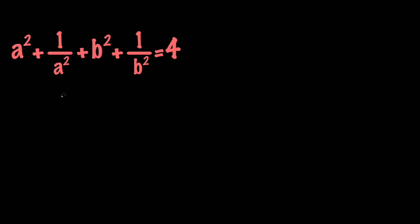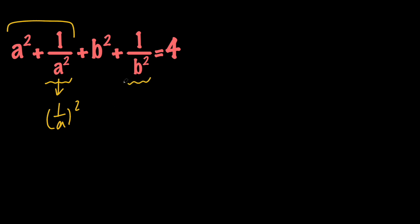First of all, notice that 1 over a squared is the same thing as (1 over a) all squared, which means that this is a sum of two squares. And since 1 over b squared is the same thing as (1 over b) all squared, the same thing is true for these two, which means that we have two sums of two squares on the left hand side.